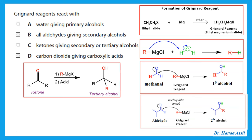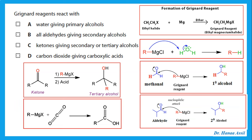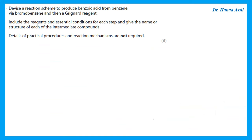What about reacting a Grignard reagent with a ketone? A Grignard reagent with a ketone gives a tertiary alcohol, not secondary — so that choice is wrong. What about reaction with carbon dioxide? Yes, the Grignard reagent with carbon dioxide produces carboxylic acids. Please remember all of this about the Grignard reagents.